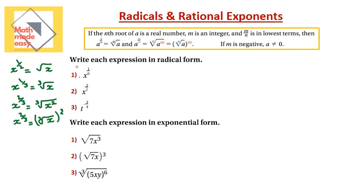Write each expression in radical form. I have x to the power of 1 over 6, so this is the 6th root of x — because the denominator is 6. If we have x to the power of 2 over 7, this equals the 7th root of x squared, or the 7th root of x in parentheses with the square outside — both give the same value.